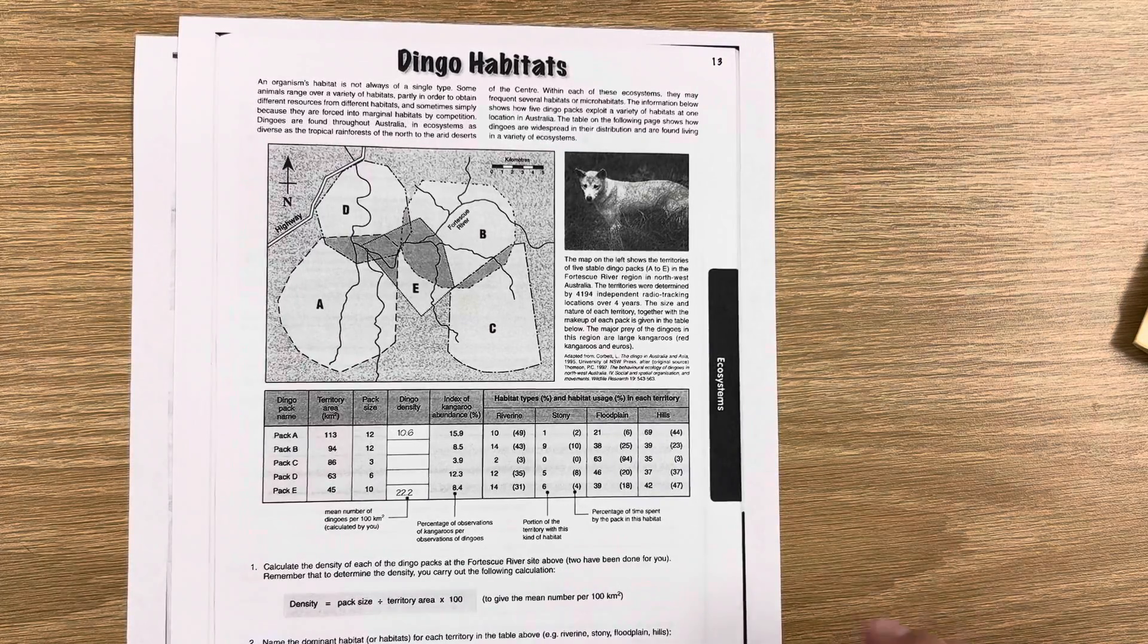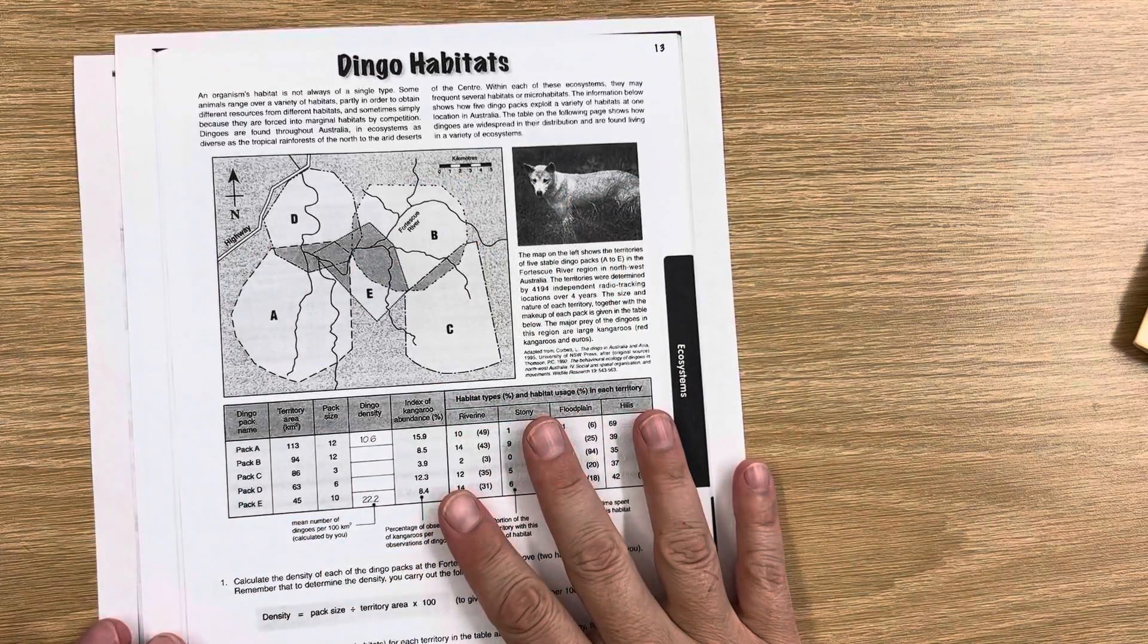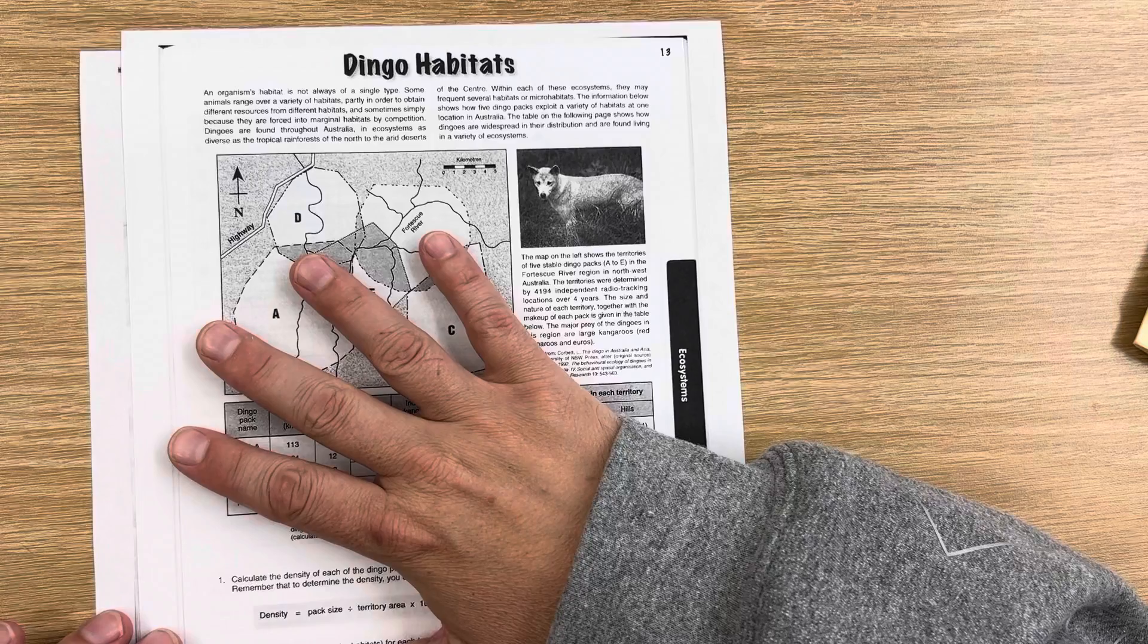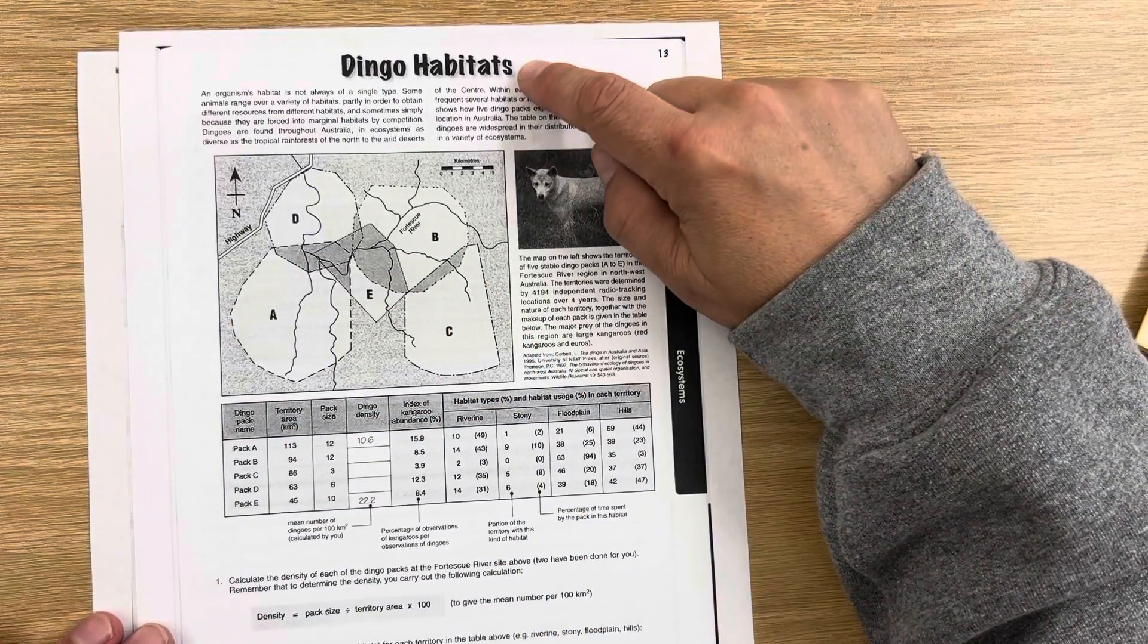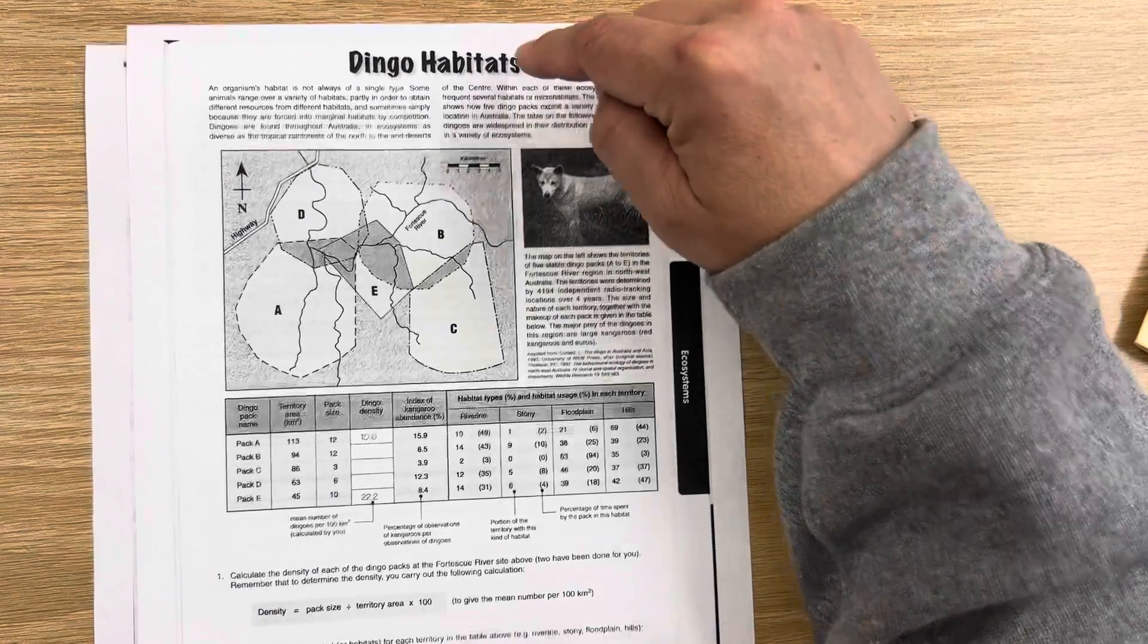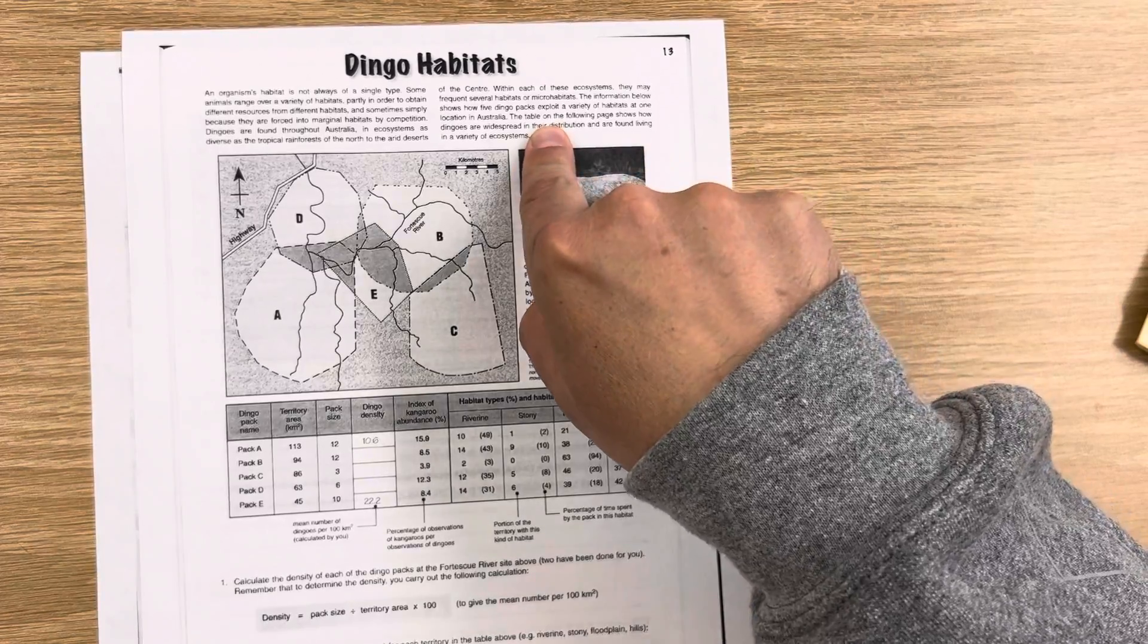Good morning. I wanted to go over this worksheet with you just to kind of describe what it is you're seeing so that it can help you complete this assignment. We're looking at ecology and habitats, specifically dingo habitats. You can read about that here. It just gives an introduction to those populations.